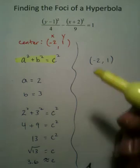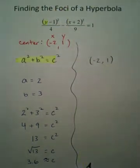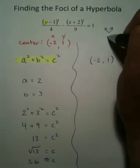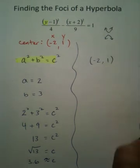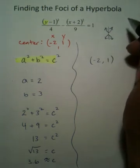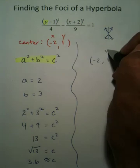In past videos we've discussed that this is, starting with the y value, what's called a vertical hyperbola. That means it's going up and down, so we're going to add it to the y value.